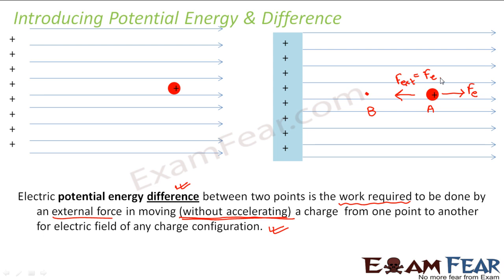It will accelerate only when the external force is much larger than the force due to the electric field. Here we are only talking about applying that minimum amount of force to make the body move without accelerating. So the external force is always equal to the force due to the electric field. Work done by an external force to move a charge without accelerating from one point to another, for the electric field of any charge configuration — that is potential energy difference.